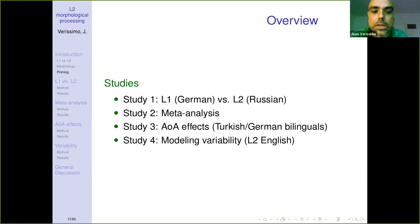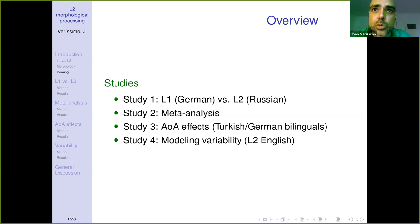The studies I'm presenting today are four in total: the first contrasting morphological priming in L1 versus L2 groups; the second, a meta-analysis of L2 morphological priming with the masked priming paradigm; the third examining age of acquisition effects in a population of Turkish-German bilinguals; and the fourth making use of distributional statistical models to model variability caused by different priming effects.